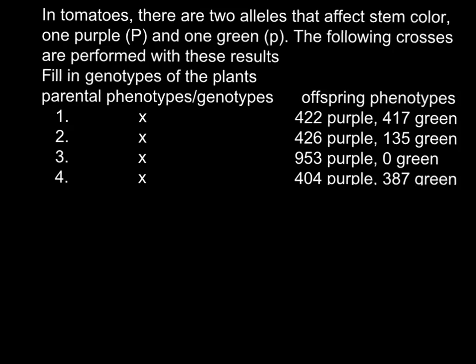How are we going to solve this problem? Actually this is very easy. We have two alleles — one is purple and another one is green. Purple is designated with capital P, so we know that this is the dominant trait or allele, and that is why we use capital P.